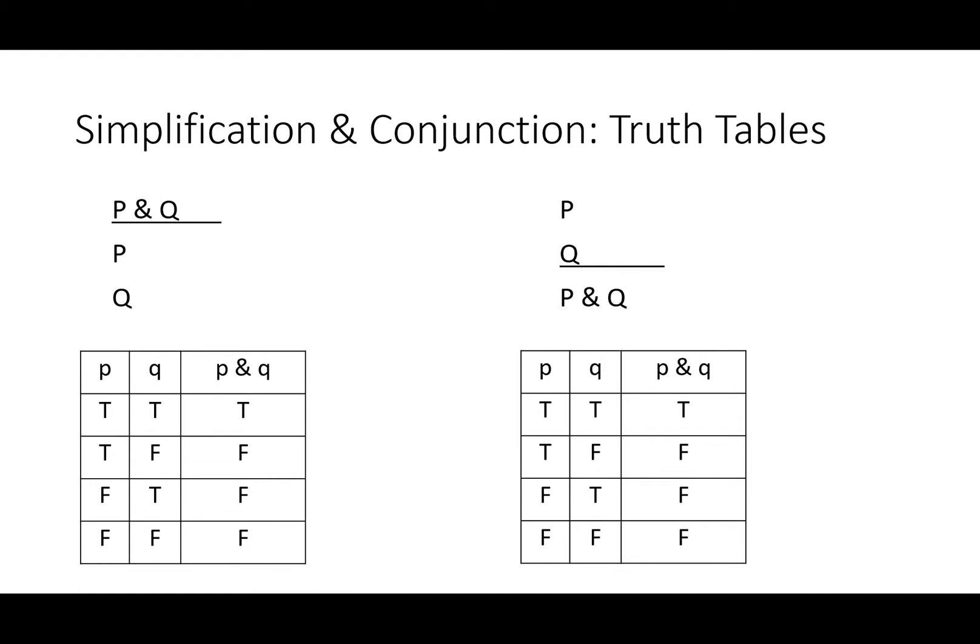We can also use truth tables, joint truth tables in fact, to prove that these are valid arguments. With a joint truth table, first we highlight all of the rows with all true premises. We're only interested in the first line because that's the only one with all true premises. For both of them there are only true conclusions, no false conclusions. Both of these are therefore valid arguments.